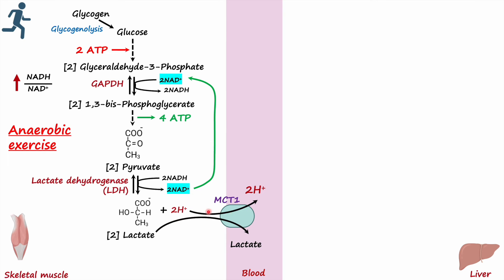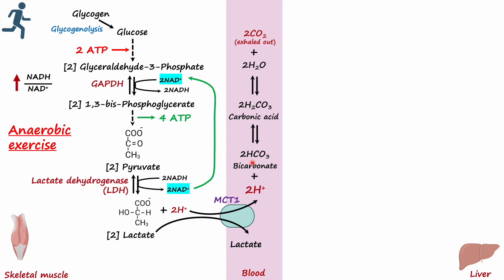If too many hydrogen ions are transported into the blood, it can decrease intracellular pH and cause the blood to become acidotic. To prevent this, blood has a buffering system using bicarbonate to form carbonic acid, which then breaks down into water and carbon dioxide, and the carbon dioxide is exhaled. This is how the blood handles excess hydrogen ions and prevents acidosis.